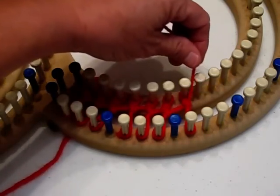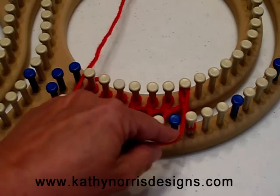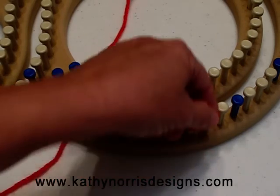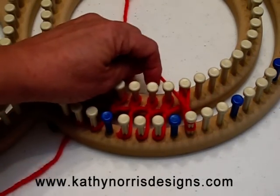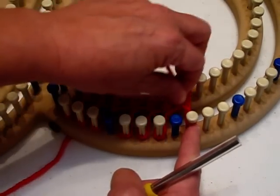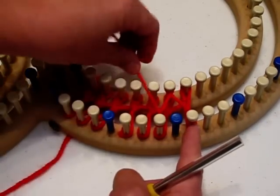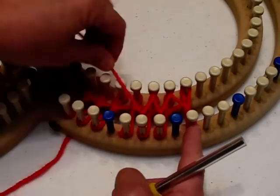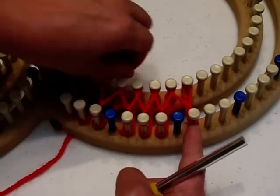We're going to bring our working yarn around the first peg at the top, crossing over to wrap the one at the bottom, and you see how it makes our figure eight. Bring it to the inside top peg around and to the bottom and around. We'll work all the way back for our first row. This is the figure eight stitch.